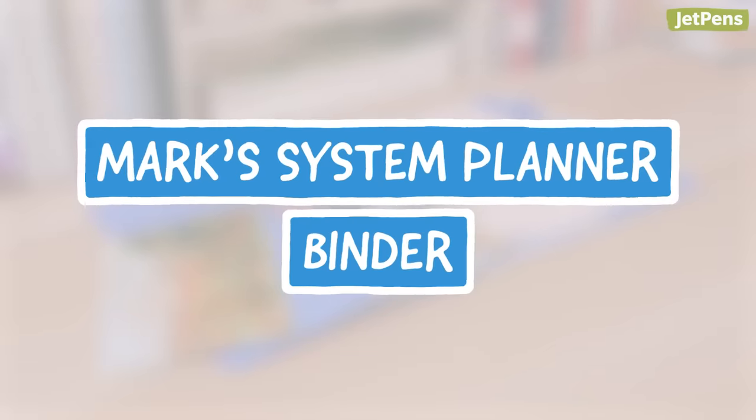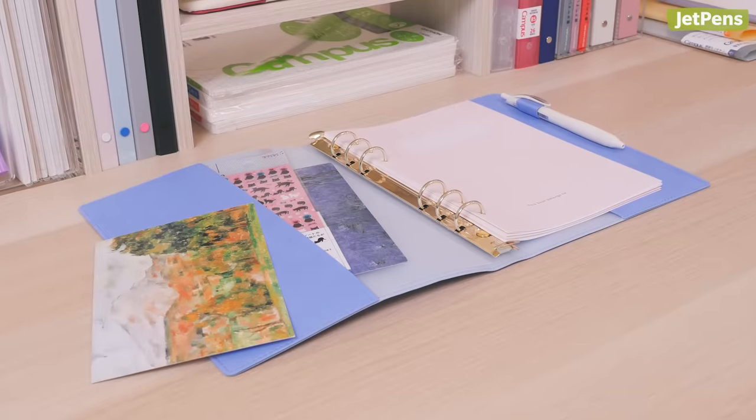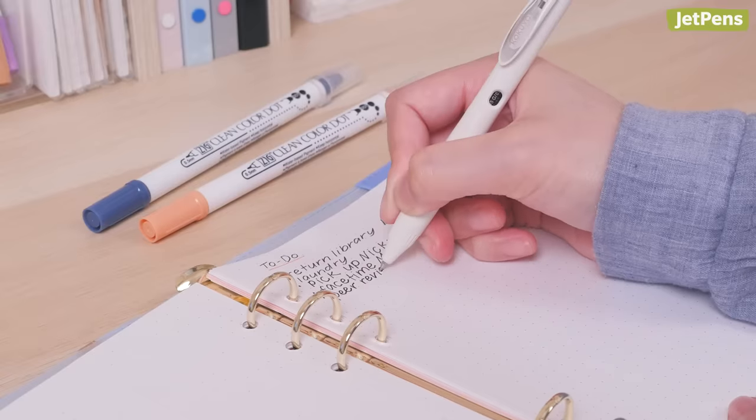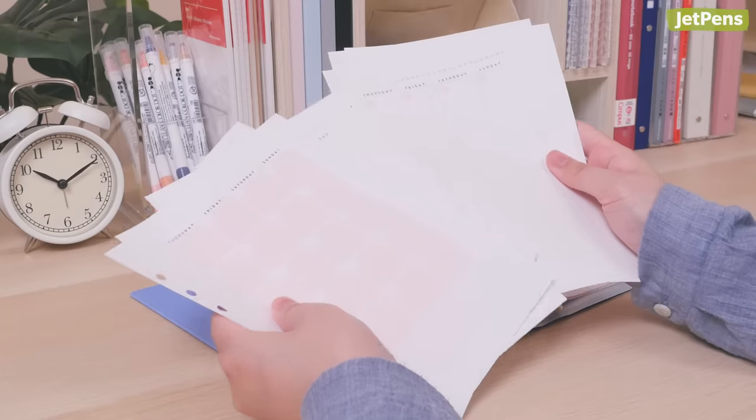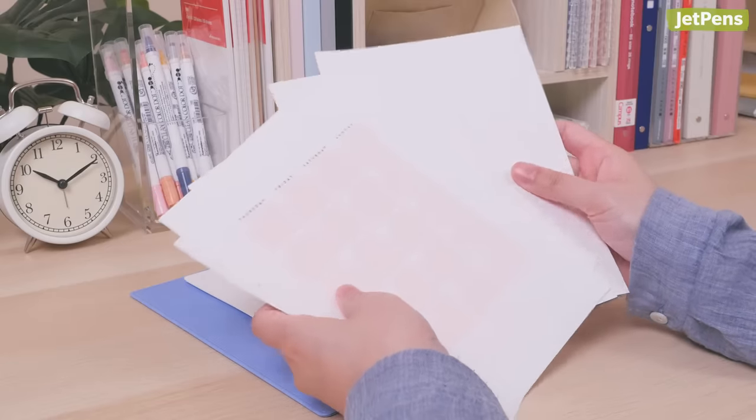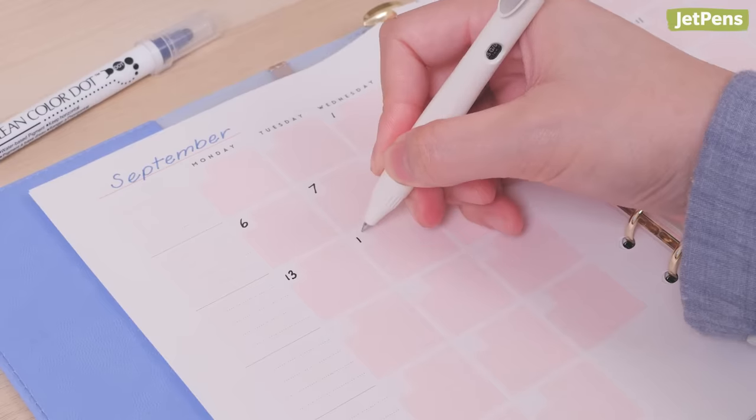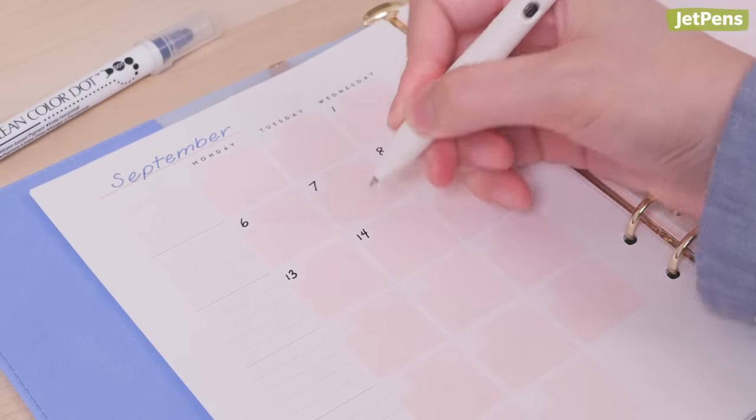These adorable Mark System Planner Binders will help you corral your to-do lists and future goals. They come with some pages to get you started, and you can fill them in with your choice of monthly calendars, weekly planners, and blank dot grid sheets. They're all undated, so you can start planning whenever you want.